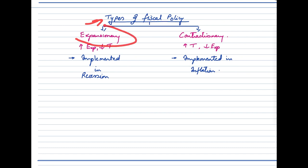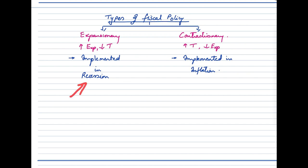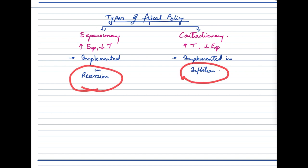There are two types of fiscal policy: expansionary and contractionary. An expansionary fiscal policy focuses on increasing government spending and reducing taxes, and is generally implemented during a recessionary phase. If you need a better understanding of why these policies are used during recession and inflation, please refer to the tools of monetary policy video.